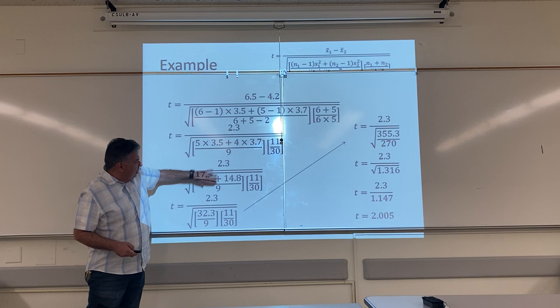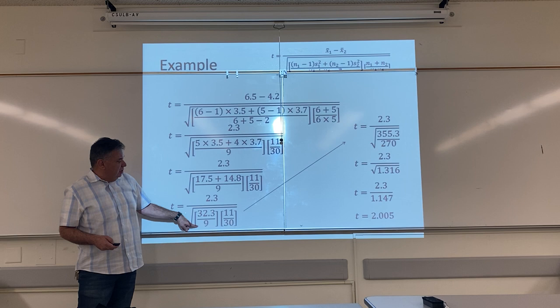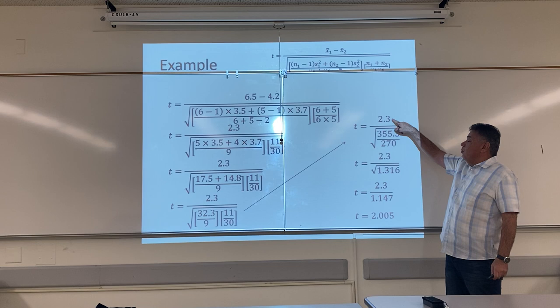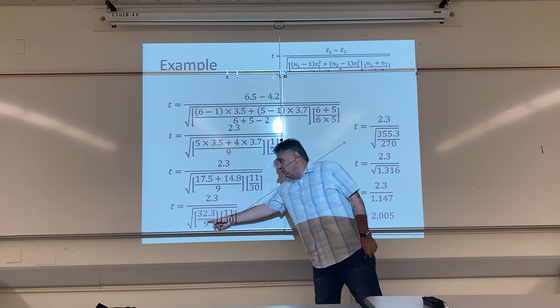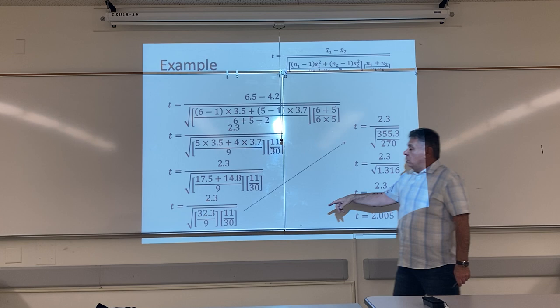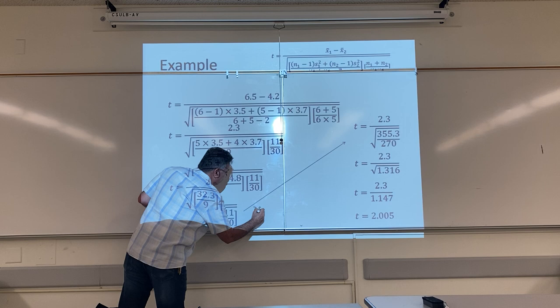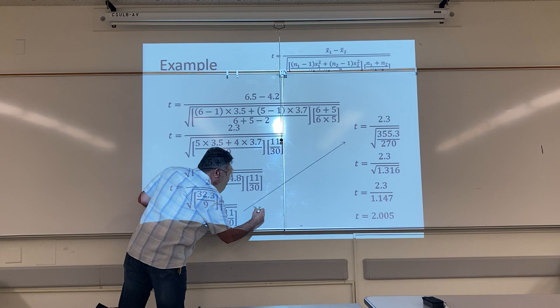I've already multiplied, so now I add them. 17.5 plus 14.8 is 32.3 over 9. This is 11 over 30. So, I'm going to come over to here now. I solved for my numerator a while ago. 6.5 minus 4.2. That's 2.3. Look, instead of solving this and then solving this and having two numbers with decimals, what did I do? I multiplied across. So, if you get your calculator, 11 times 32.3, that's 355.3 and 9 times 30 is 270. That's how I get this answer here.